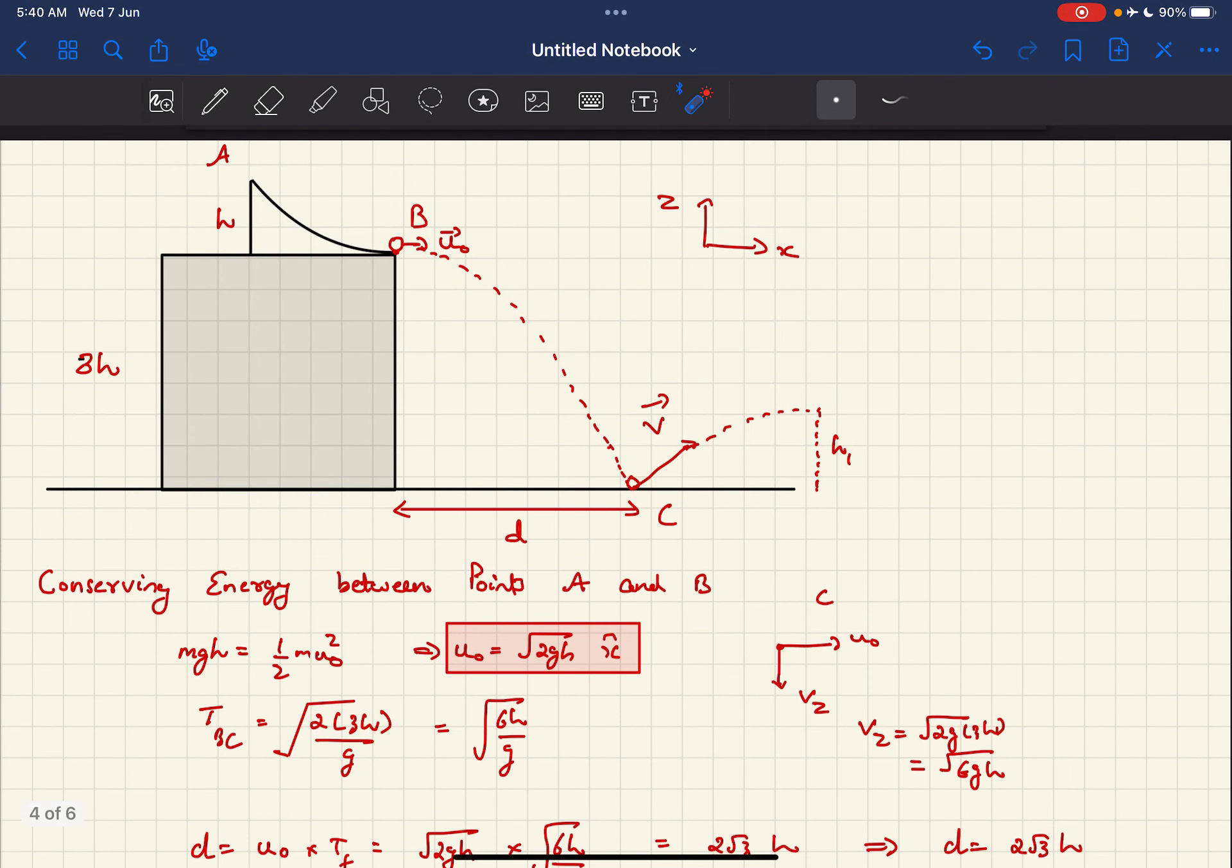In this problem, we have a ball that is sliding down a curved frictionless surface AB. After it reaches point B, the velocity becomes horizontal and it does a horizontal projectile motion from B to C. After the collision from point C, it does another projectile motion. So we need to find D, H1, U0, and V.